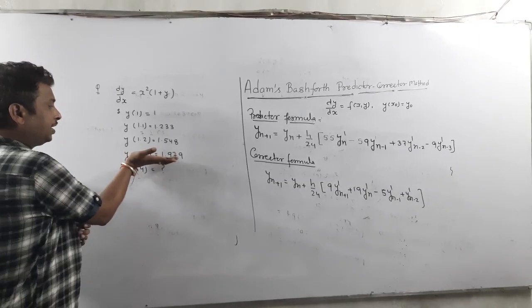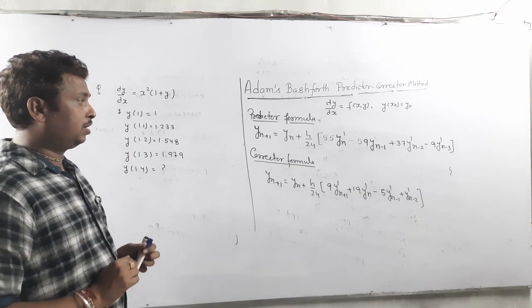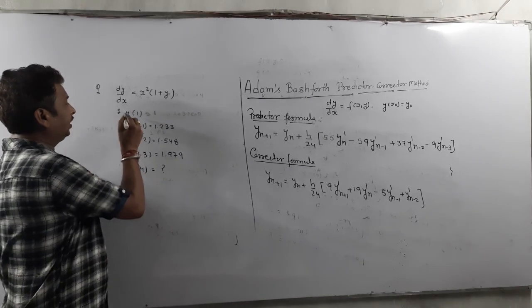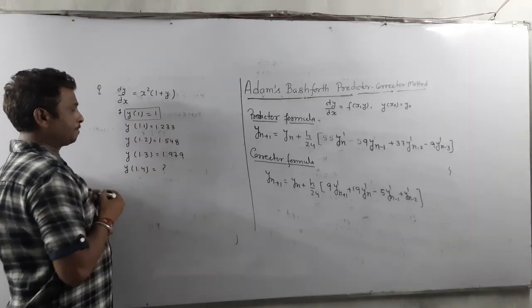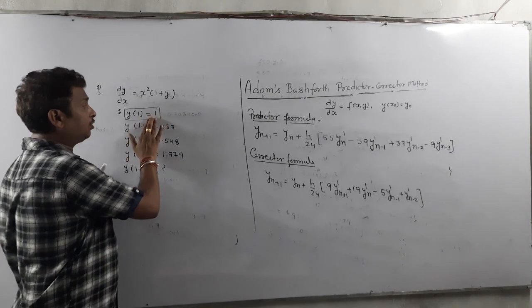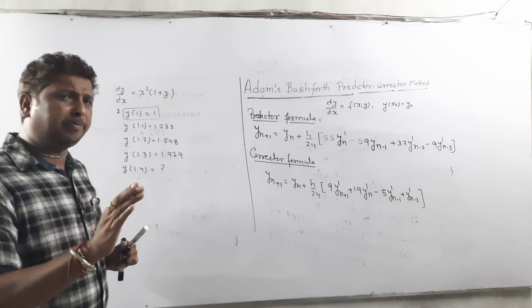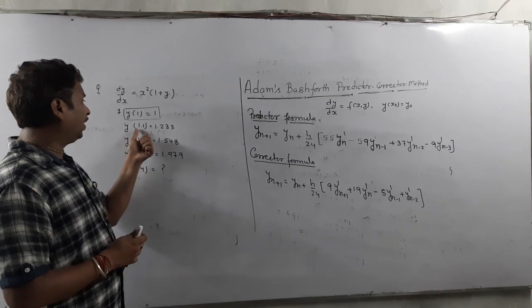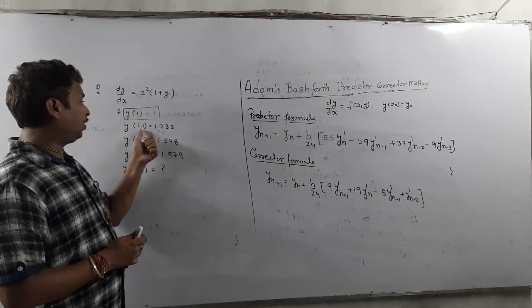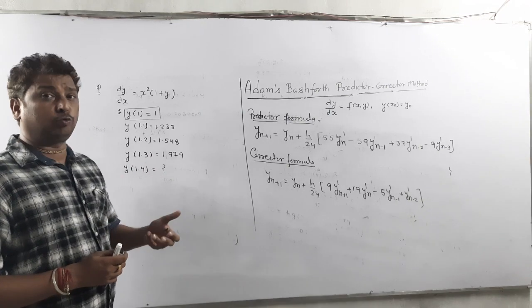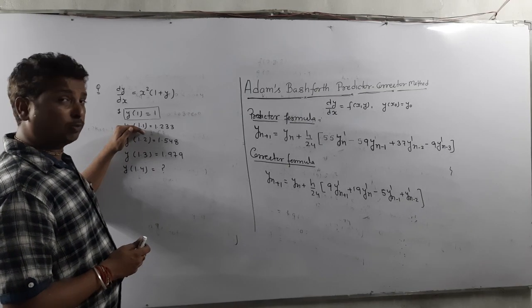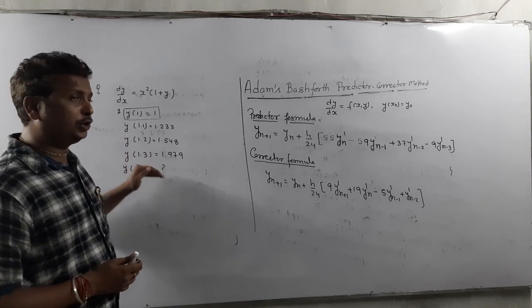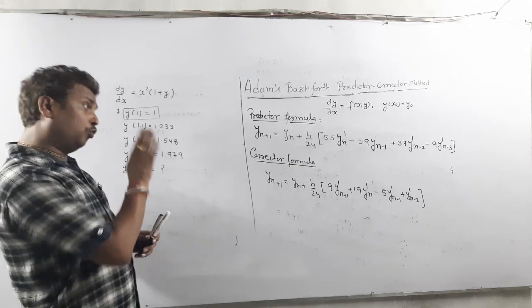Up to y at 1.3 the values are given. Sometimes they will give only one initial condition. If they give only one, then you have to use any method — Euler, Runge-Kutta, or any other method — to calculate values at 1.1, 1.2, and 1.3, meaning you have to go through four steps.